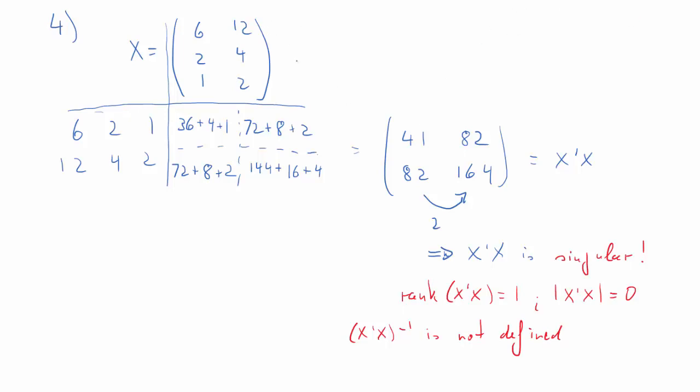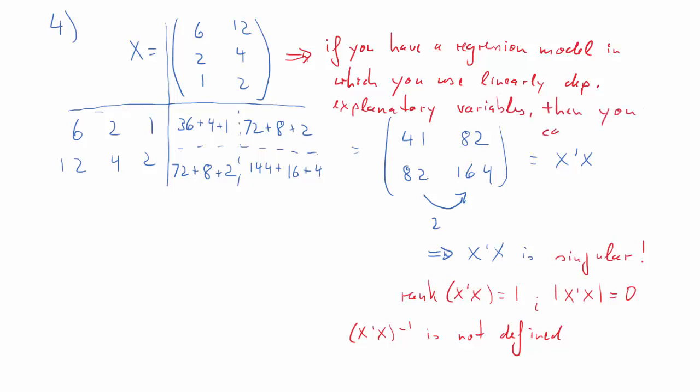So, here we had an example where x prime x inverse is not defined. And what does that mean? That means if you have a regression model which uses an x matrix like this, which has linearly dependent explanatory variables, then you actually cannot calculate the OLS estimators, beta hat. No way. I should add at this stage that I actually haven't shown you in this clip how to calculate an inverse. That's usually done by a piece of software anyway, but there are lots of clips available where you can see how to invert it. Here, it was only important when we would be able to do that.